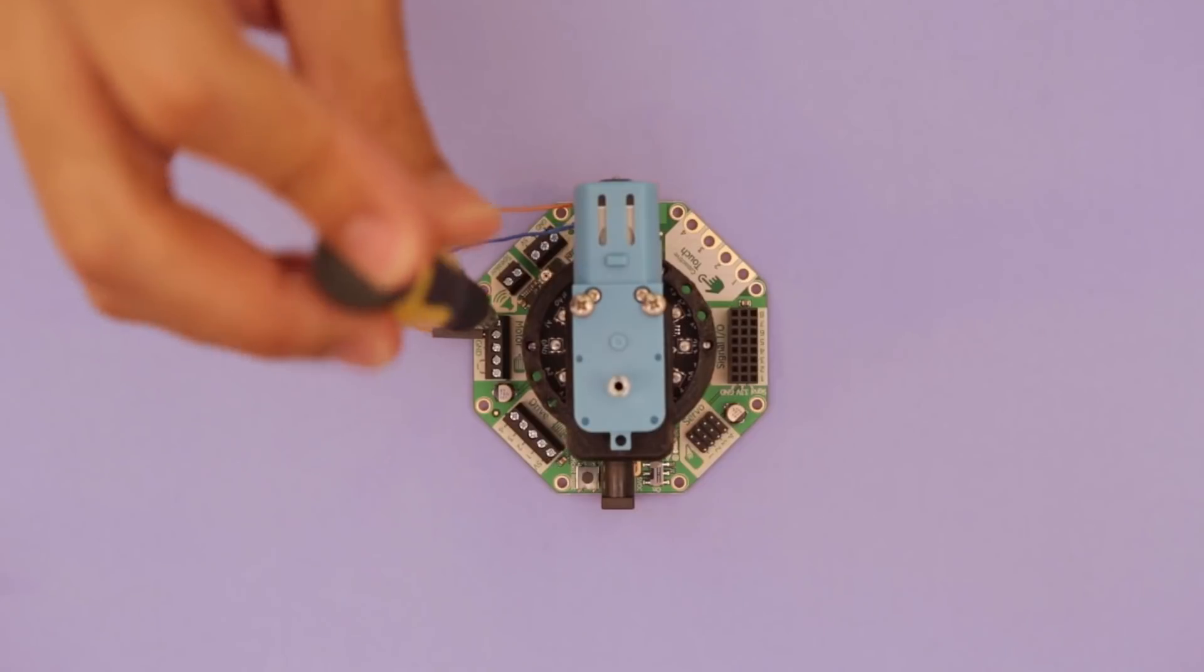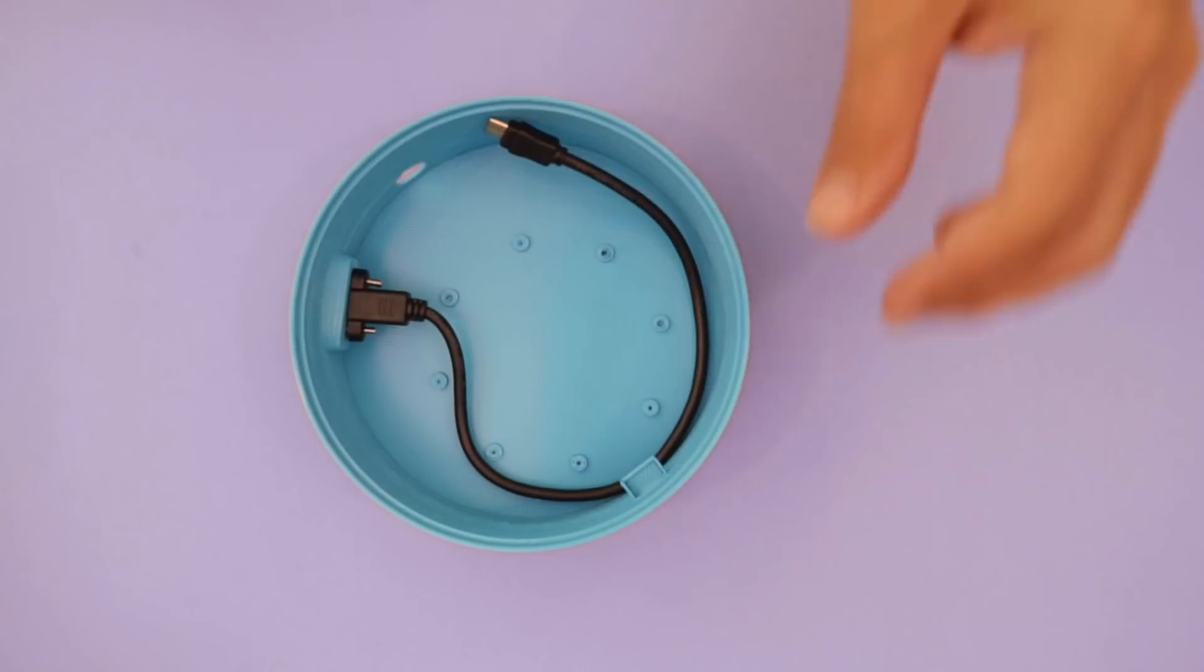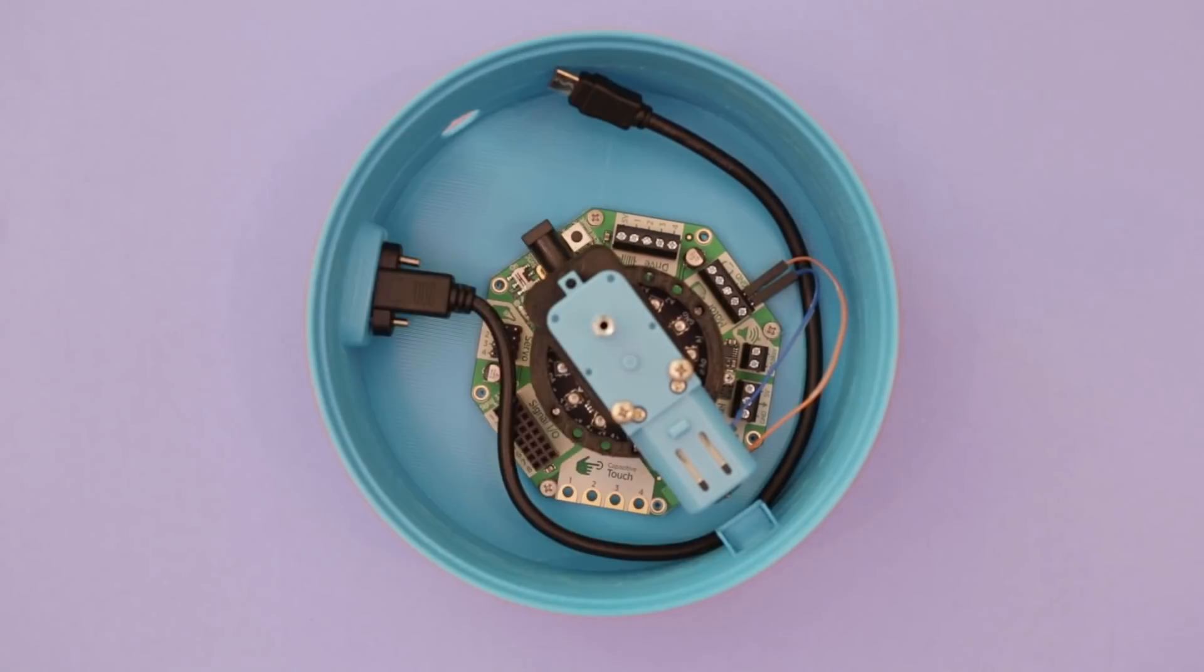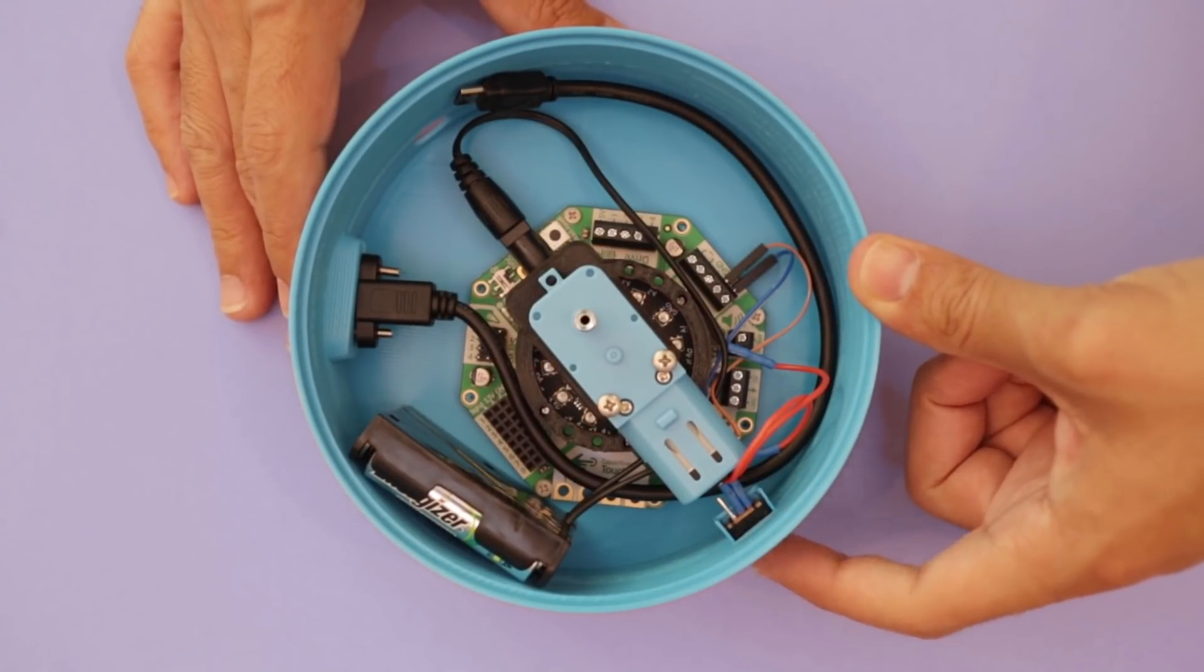Jumper wires plug directly into the screw block terminals. A panel mounted micro USB cable is used for uploading code. The Cricut PCB is secured to the standoffs inside the enclosure. The AA battery pack is tacked to the side and the slide switch is press fitted into the holder.